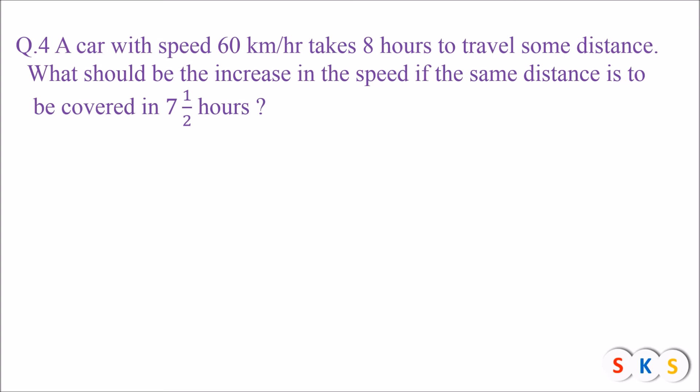Question number 4: A car with speed 60 km/h takes 8 hours to travel some distance. What should be the increase in speed if the same distance is to be covered in 7.5 hours? The car takes 8 hours at 60 km/h. Now we want to cover the same distance in 7.5 hours, so the speed must be increased. If speed increases, time decreases; hence there is an inverse variation between speed and time.